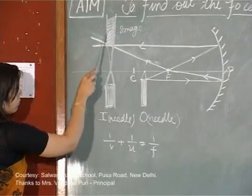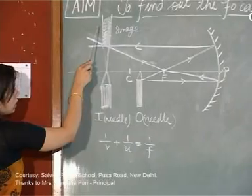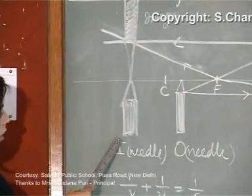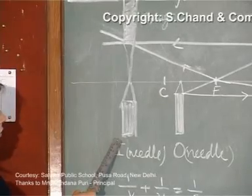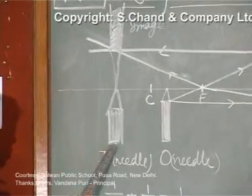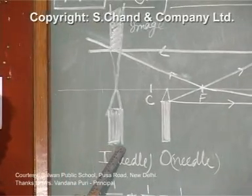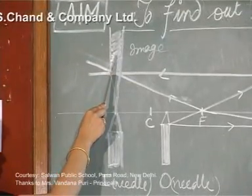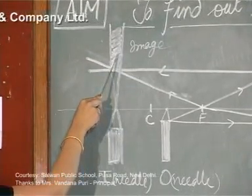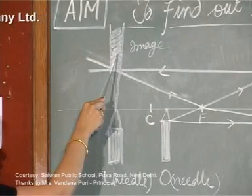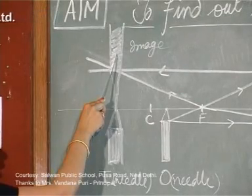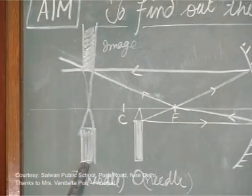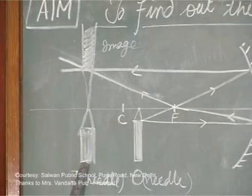Now you will be wondering that if the image is there, what is this other needle standing for? This is again a needle known as an image needle, which is used to locate the image right above it. The reason being the image is real and inverted — I can see it but I cannot locate it unless I use another needle to get its position on the optical bench.